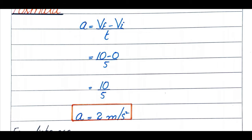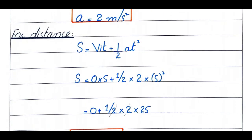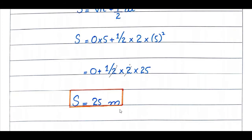For distance, using the formula s = vi·t + ½a·t²: vi is 0, t is 5, a is 2. Substituting: s = 0 + ½ × 2 × 25 = 25 meters.